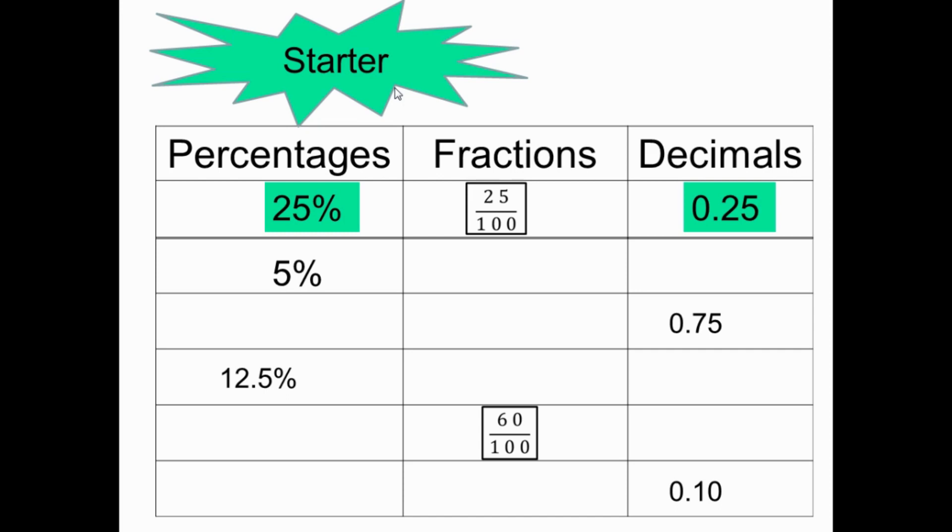Number two: 5% as a fraction is 5 over 100, which you can simplify. Divide both by 5: you get 1 over 20. For the decimal, 5 over 100 - move the point twice - equals 0.05.